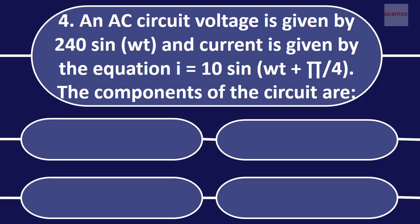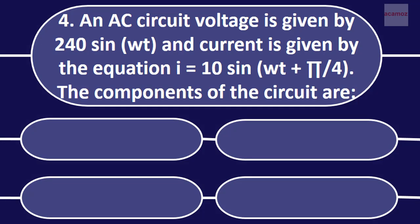An AC circuit voltage is given by 240 sin omega t and current is given by the equation I is equal to 10 sin omega t plus pi by 2. The components of the circuit are.